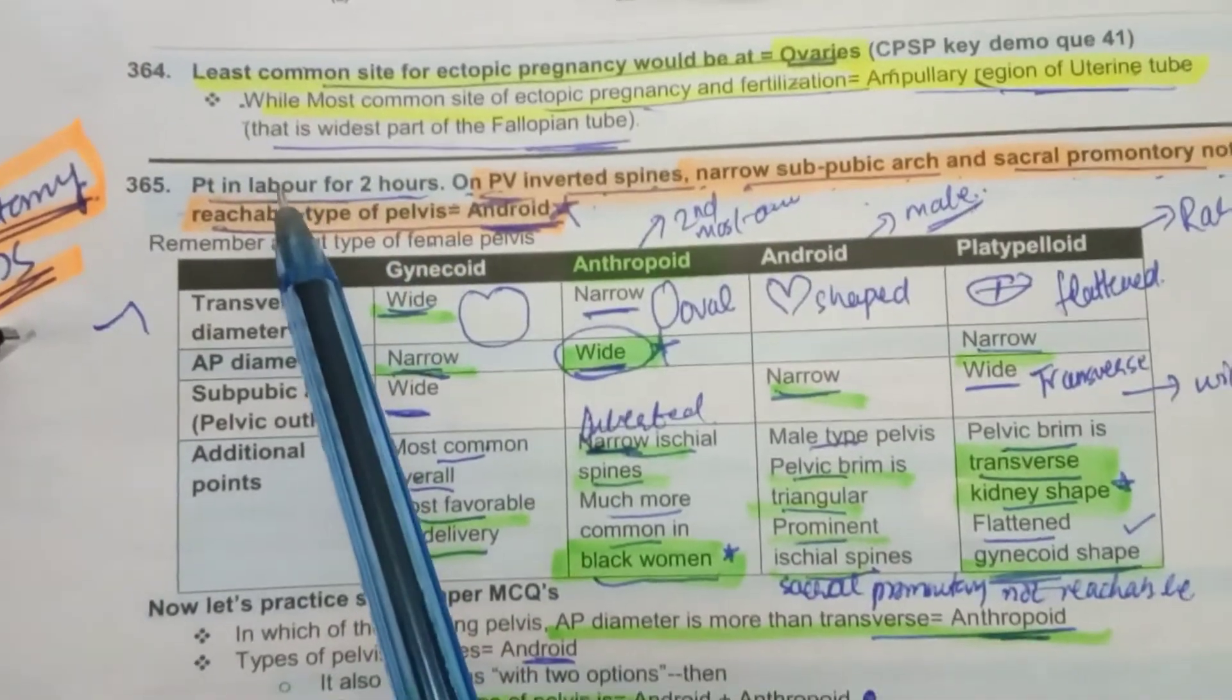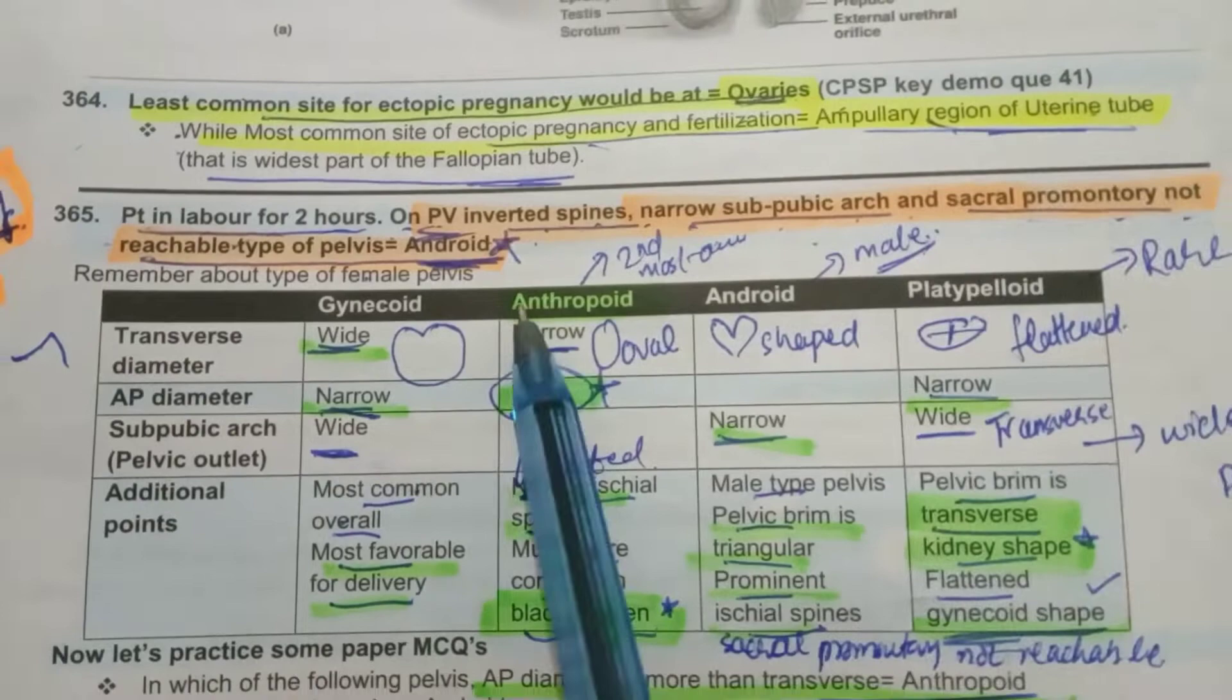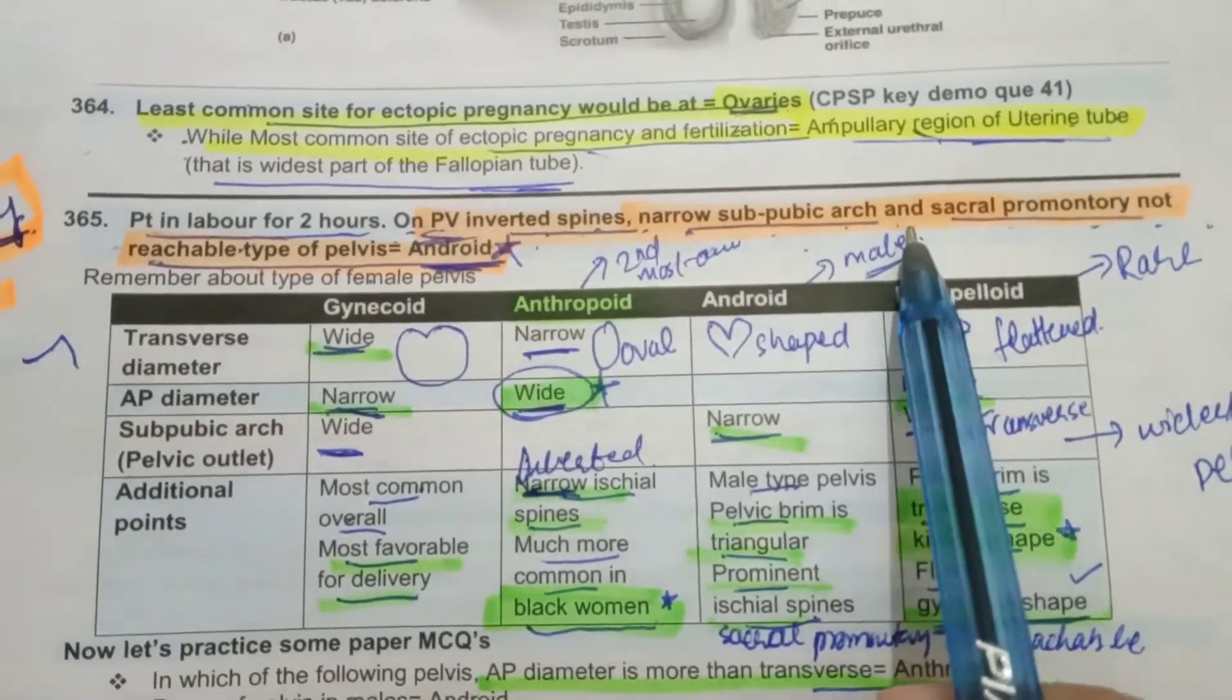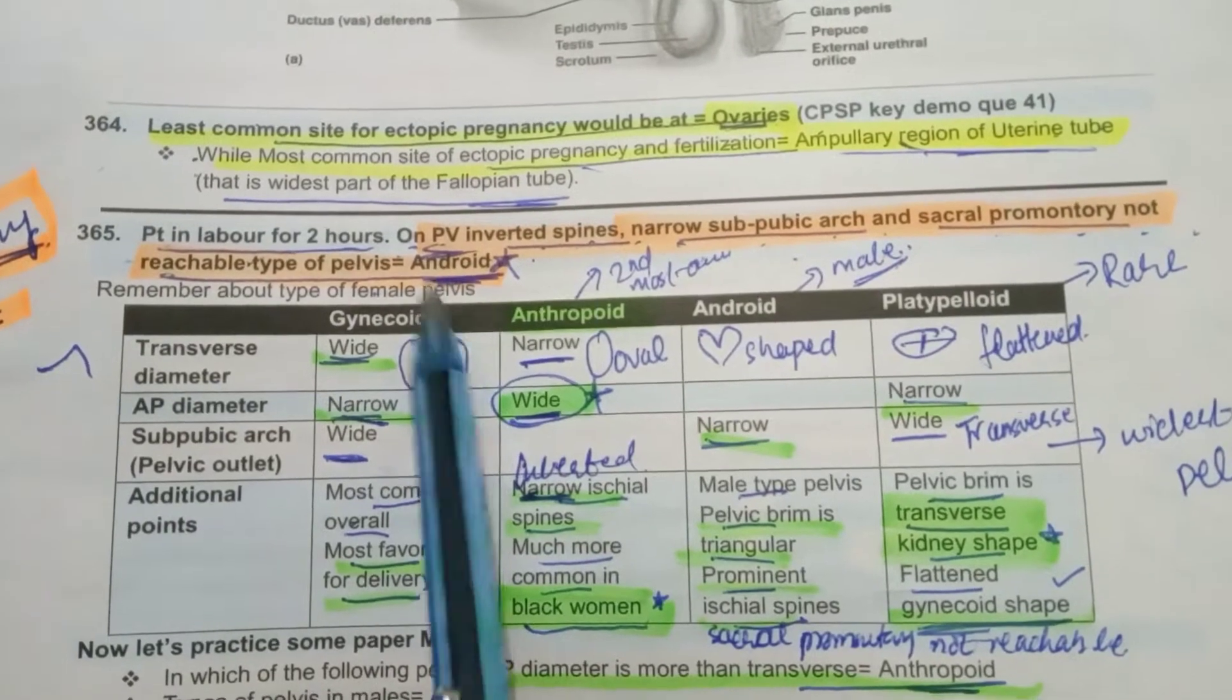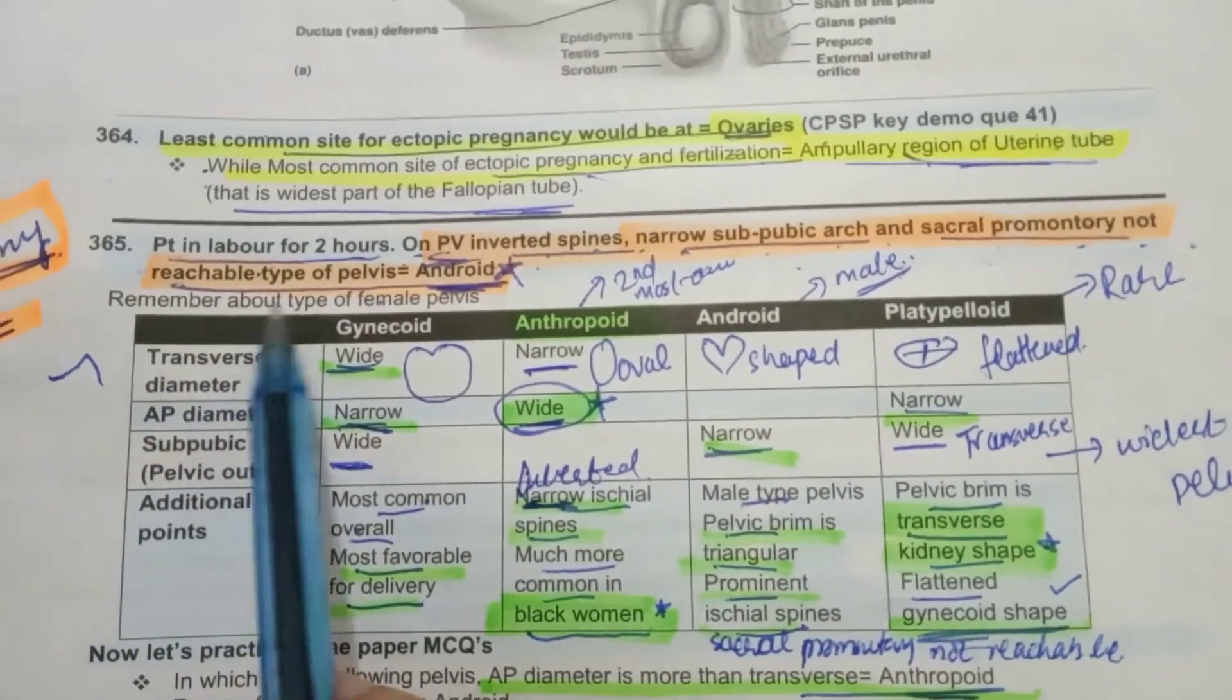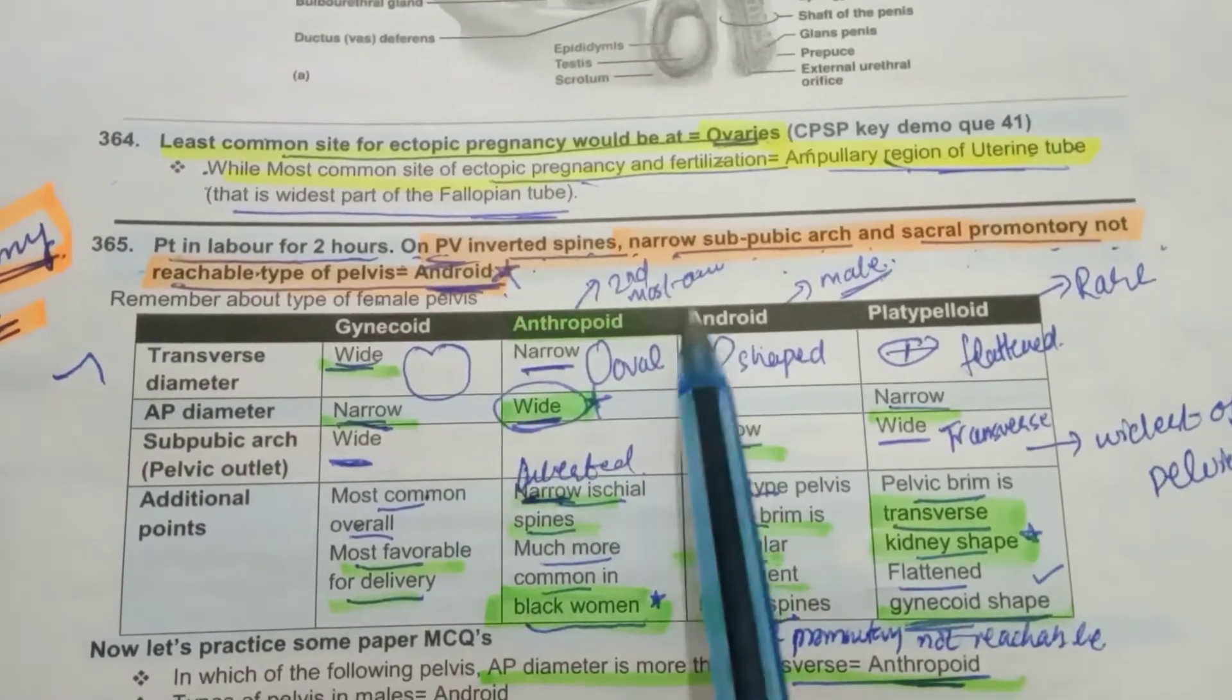Now coming to this point: patient in labor for two hours, on PV inverted spines, narrow sub-pubic arch, and sacral promontory not reachable. What type of pelvis is it? It is android. Whenever it comes to sacral promontory is not reachable, the pelvis type is android. This is the clue for it.